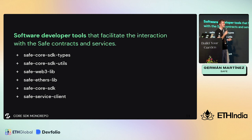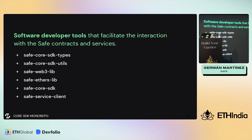Let's see how the SDK monorepo looks and what the Safe Core SDK is. It is a software developer toolkit that facilitates interaction with the smart contracts and services. Because it is a monorepo, there are several packages inside. The first two - Safe Core SDK Types and Safe Core SDK Utils - export types and utility functions. Then we have Safe Web3 Library and Safe Ethers Library, which are wrappers of the Web3 JS libraries and allow getting instances of the Safe smart contracts depending on the version and network.